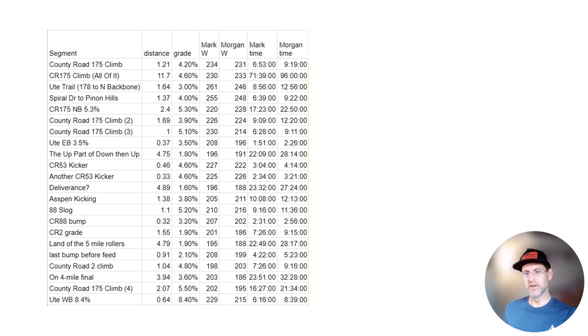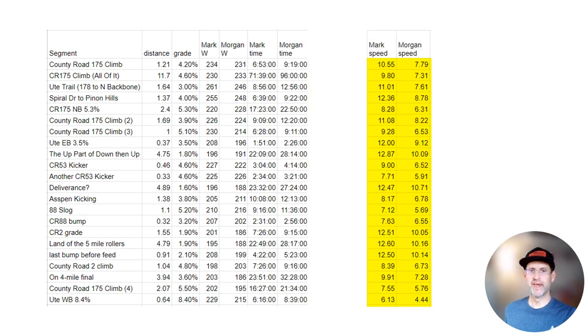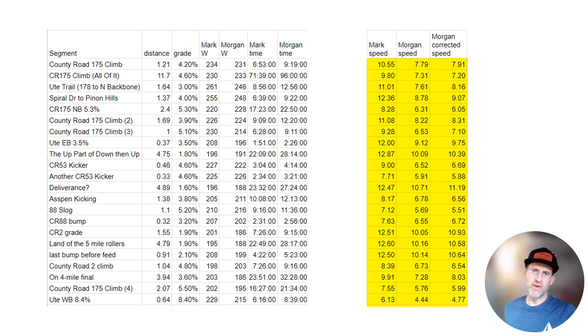With this data, I can easily compute the average speed over the segment. Our average power was almost always within five percent on each segment, but I applied a simple speed correction to normalize my speed for the difference in power either up or down.